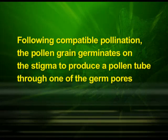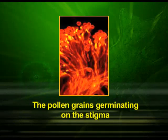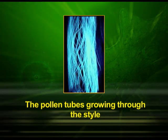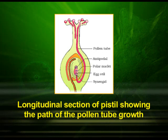Following compatible pollination, the pollen grain germinates on the stigma to produce a pollen tube through one of the germ pores. In this diagram, we can observe the pollen grains germinating on the stigma. The contents of the pollen grain move into the pollen tube. The pollen tube grows through the tissues of the stigma and style and reaches the ovary. We can observe the pollen tubes growing through the style in this diagram. The next diagram shows the longitudinal section of the pistil showing the path of pollen tube growth.